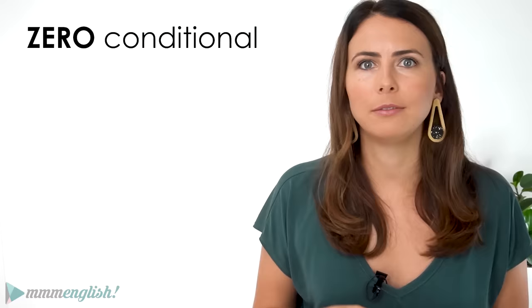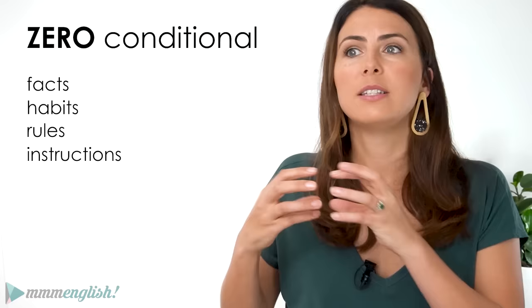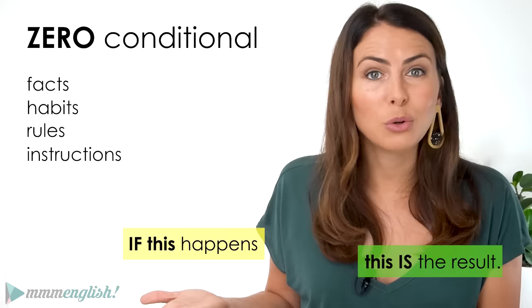The zero conditional is also called the factual or the real conditional because we use it to talk about truths and facts — things that are real in the world. We also use it to talk about habits, rules, and to give instructions that are the result of something else happening first. In other words, if this happens, then this is the result — always. It's a fact, it's the truth, it's just how it is.